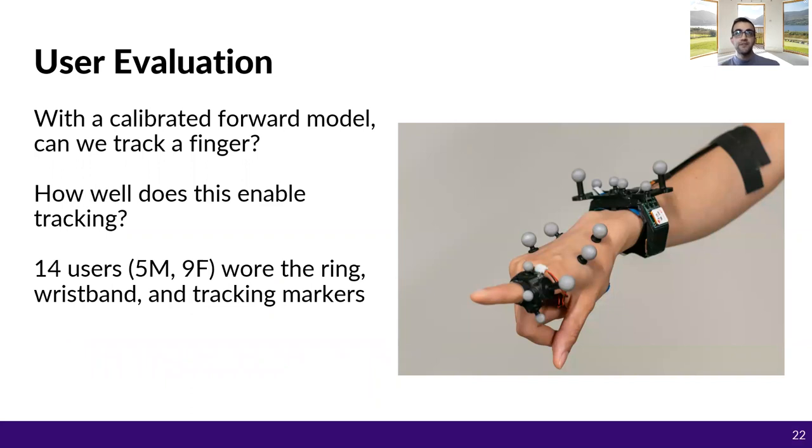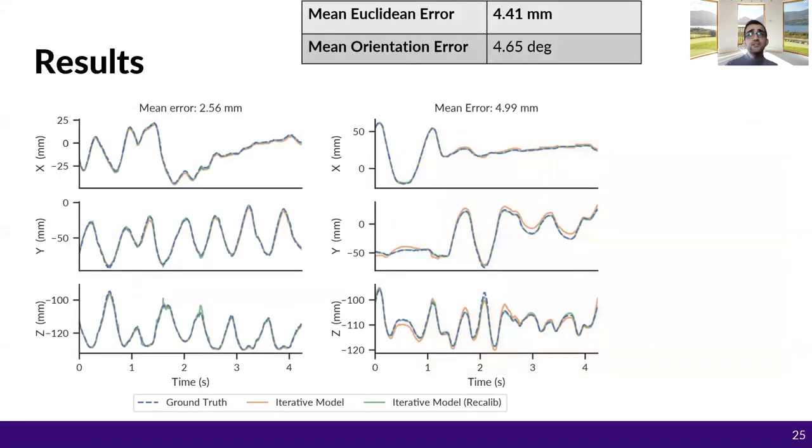To evaluate our system, we recruited 14 participants and asked them to wave their hands and fingers for 10 minutes. In this evaluation, we wanted to understand how well the calibration model tracks the ring. And here are the results. You can see a representative few seconds of 3D positional tracking for two of the participants.